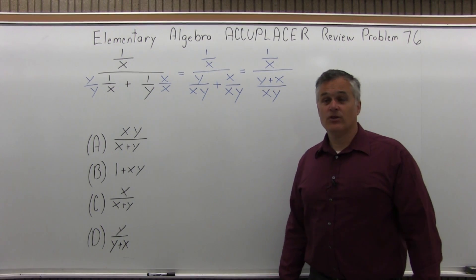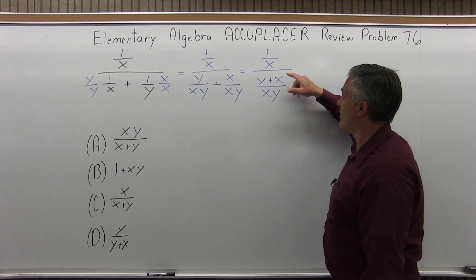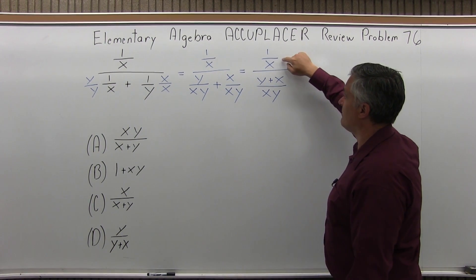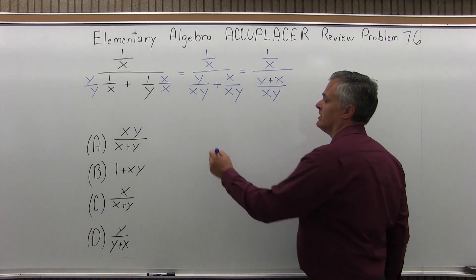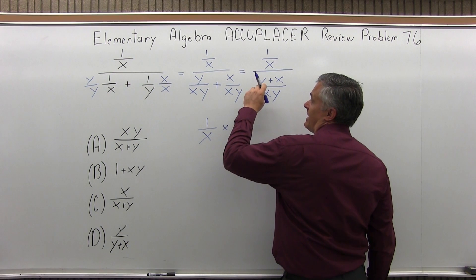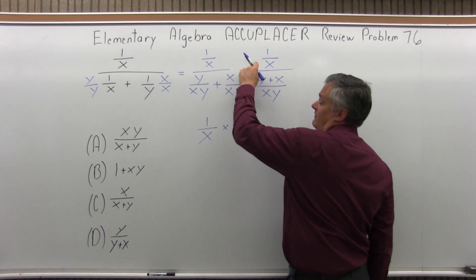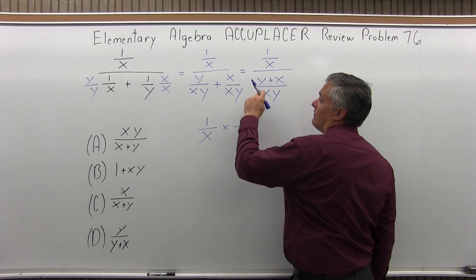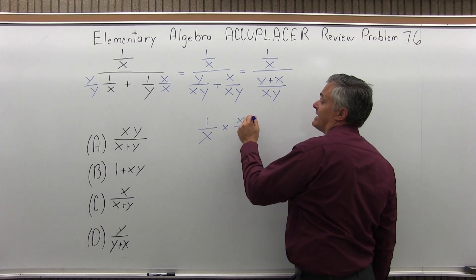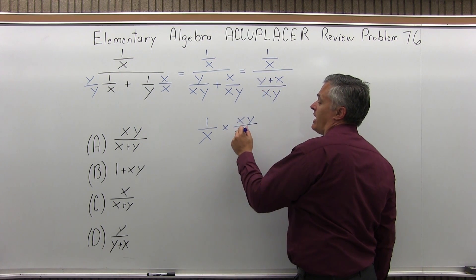Now what I can do, I have a fraction made of little fractions. I'm going to take the lower fraction and invert it or flip it and multiply times the top fraction. So the top fraction of one over x will stay one over x. But now it's going to change to a times because the fraction bar is really a means of dividing. So I change it to a times and now I flip the lower fraction. The xy was in the denominator, comes to the numerator, and the y plus x will go into the bottom.